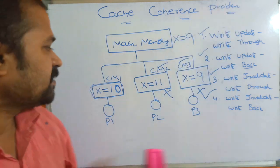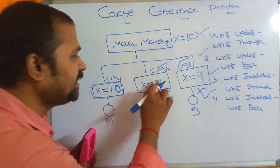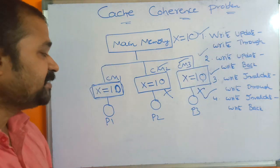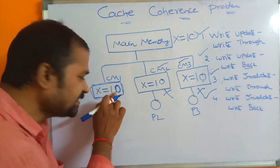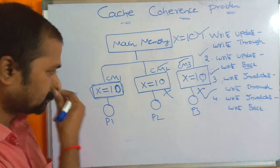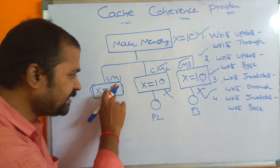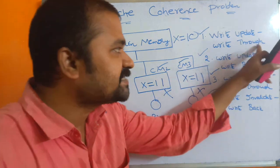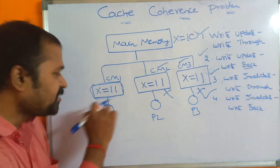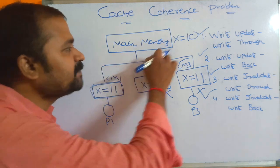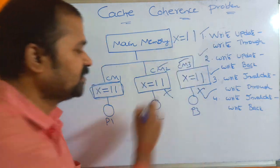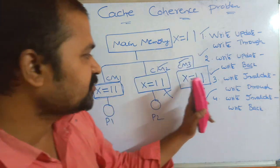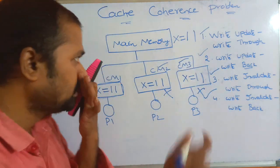Now let us see the first approach: write update + write through. Assume X = 10 in all caches and main memory. P1 updates X to 11 in CM1. Write update means other caches are also updated to 11. Write through means main memory is also updated to 11 in parallel. Now in main memory and in all cache memories, X = 11, so there is no inconsistency. The cache coherence problem is solved.